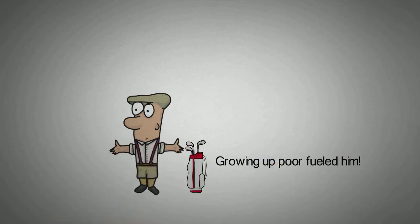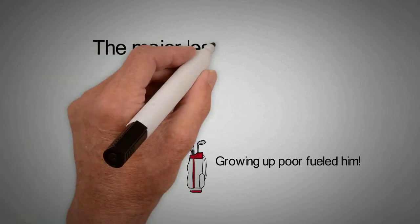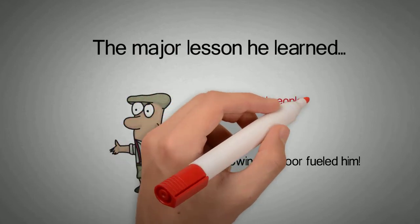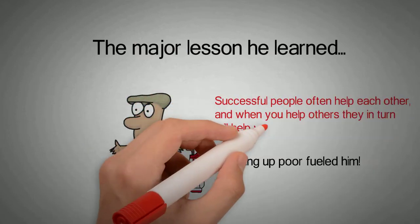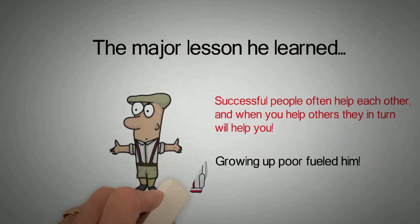Growing up poor really fueled him and pushed him forward. When he was young, he was the caddy at a high-end golf course that mostly had wealthy members. The one major lesson he received from this job was that successful people often help each other, and when you help others, they in turn help you.